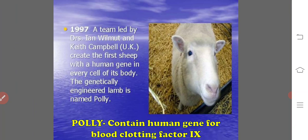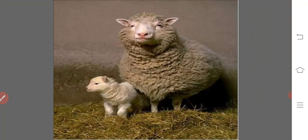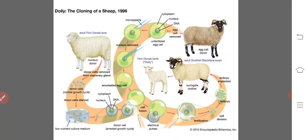Polly contains the human gene for blood clotting factor 9. In 1997, a team led by Dr. Ian Wilmot and Keith Campbell in the United Kingdom created the first sheep with a human gene in every cell of its body. The genetically engineered lamb is named Polly.